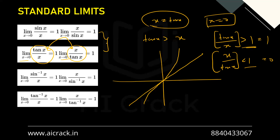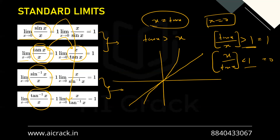Now that we've understood these limits properly — their graphs, values, and GIF results — the main thing is common: sin x / x, tan x / x, x / sin x, x / tan x and their reciprocals all equal 1 when x is approaching 0. The limiting value is always 1 when x is approaching 0.